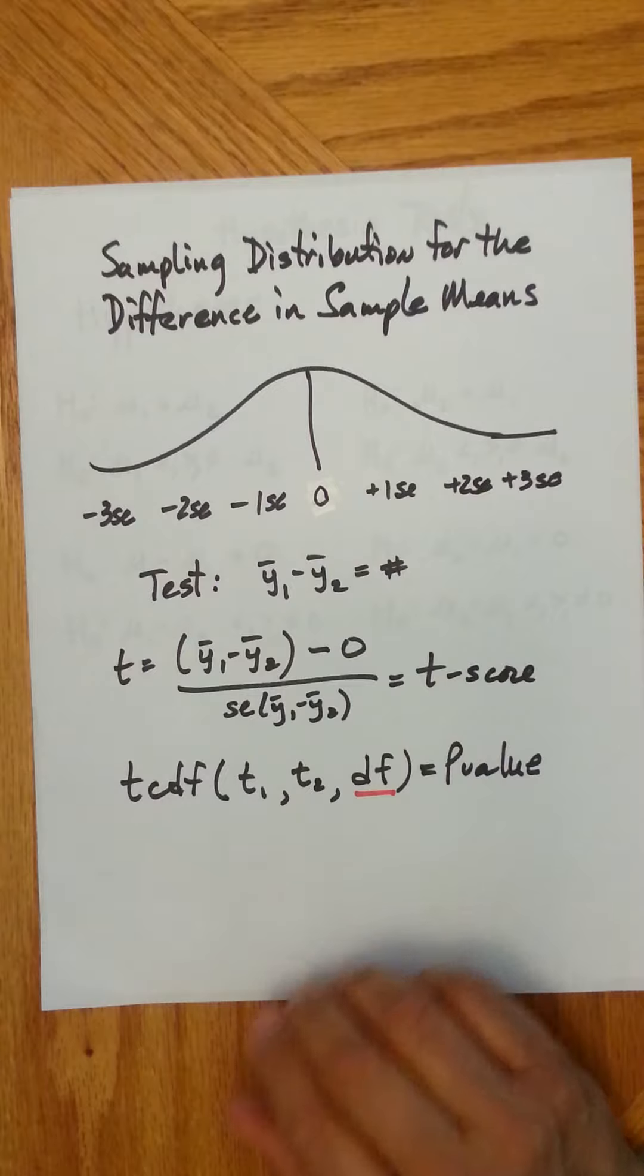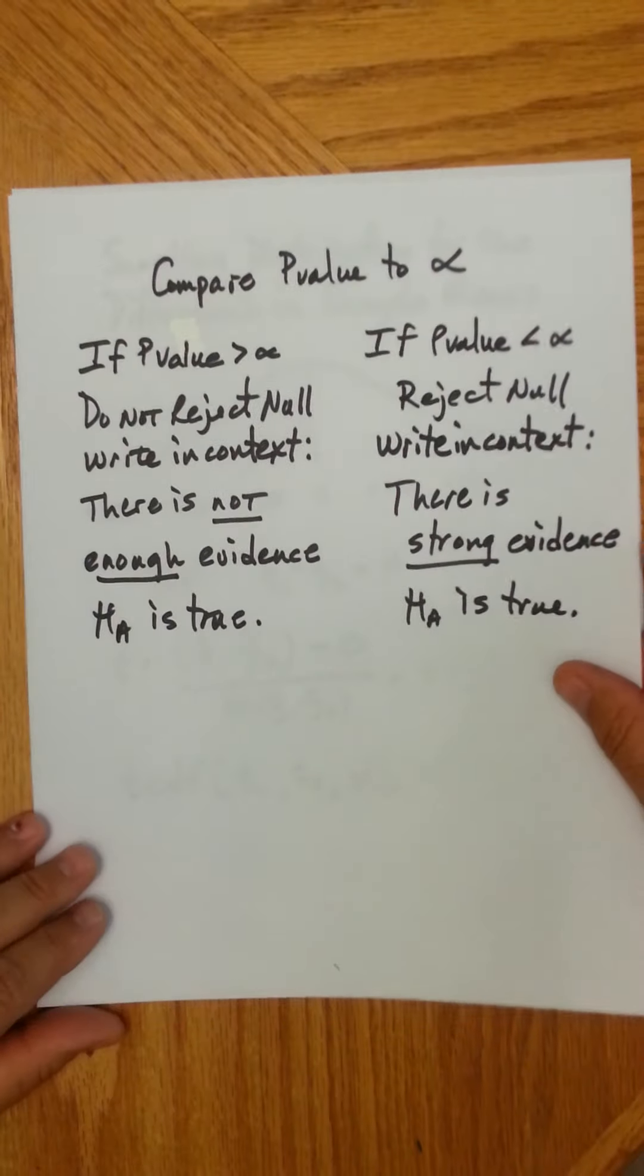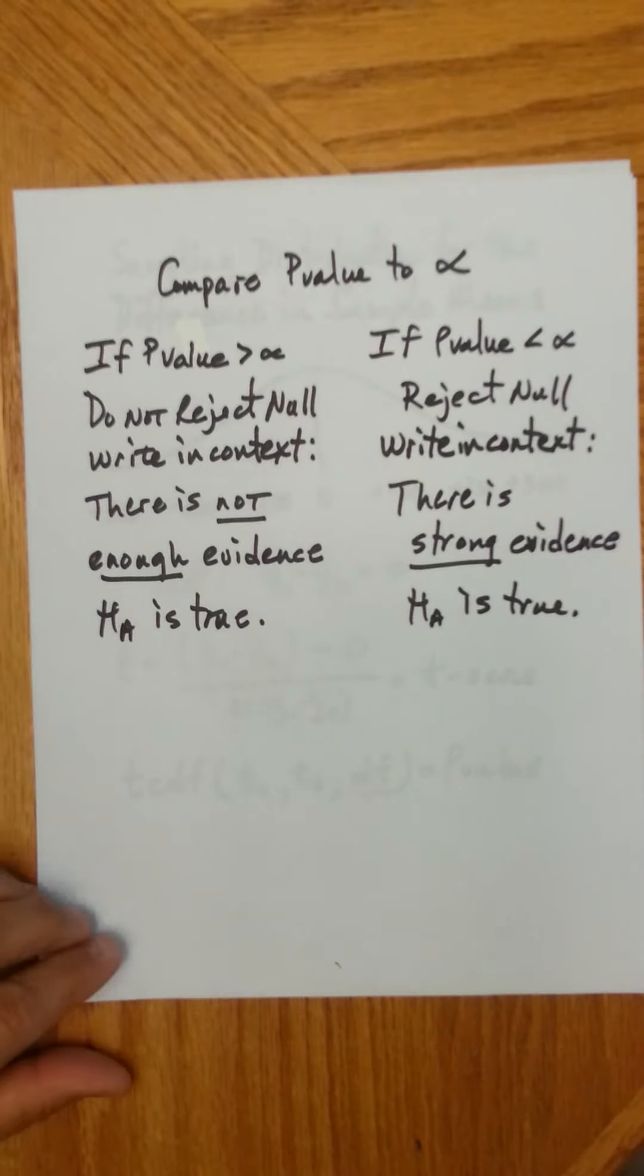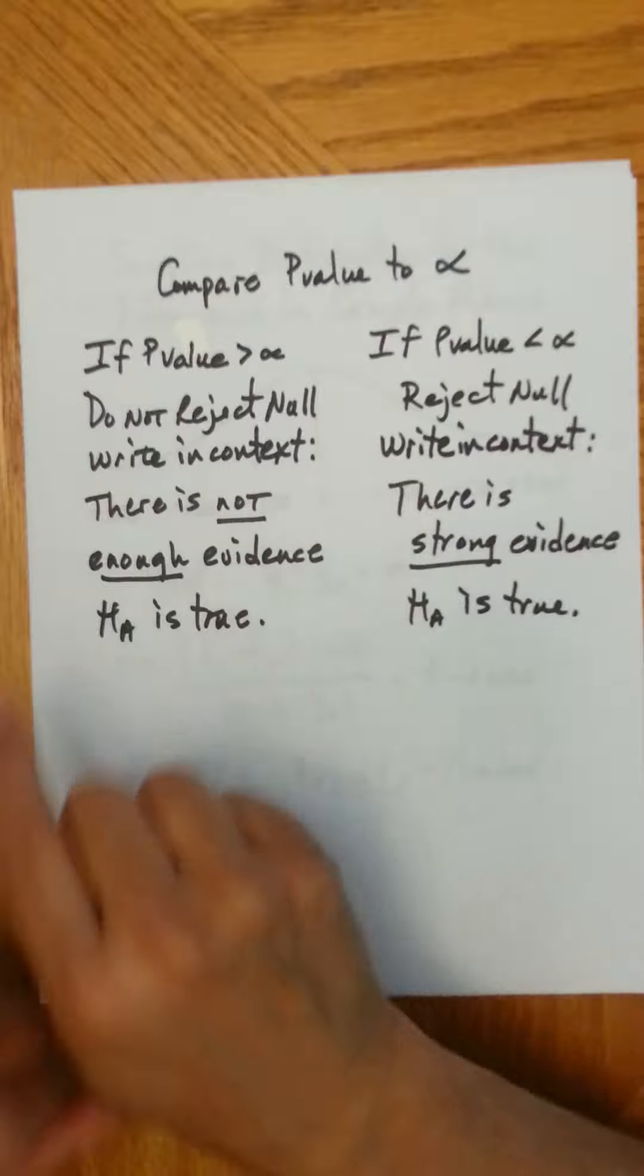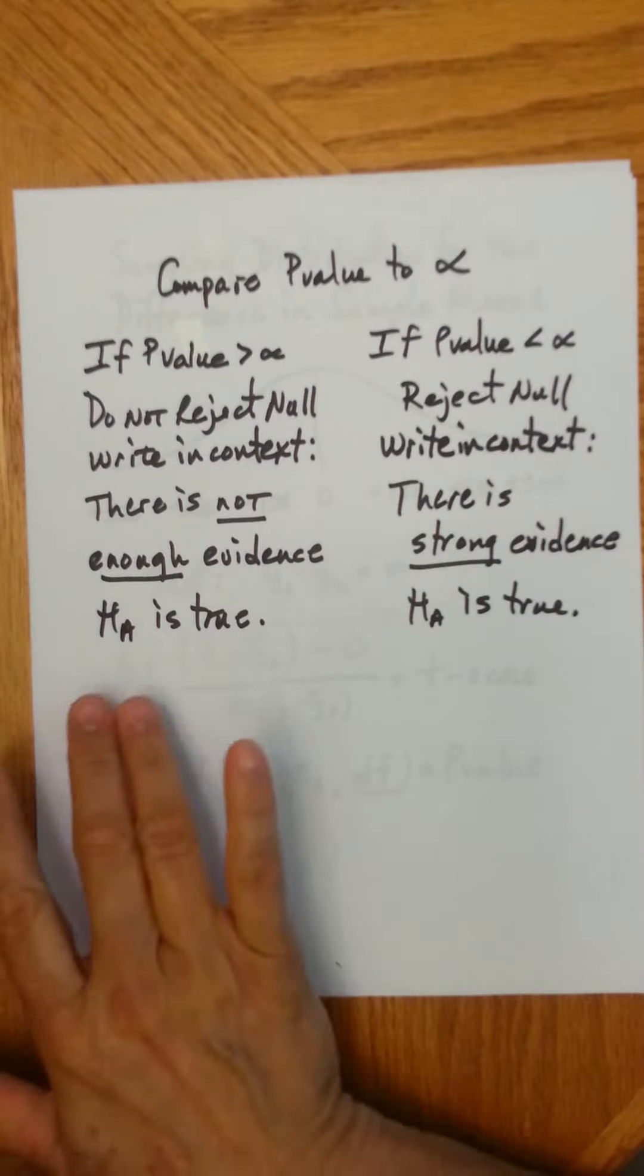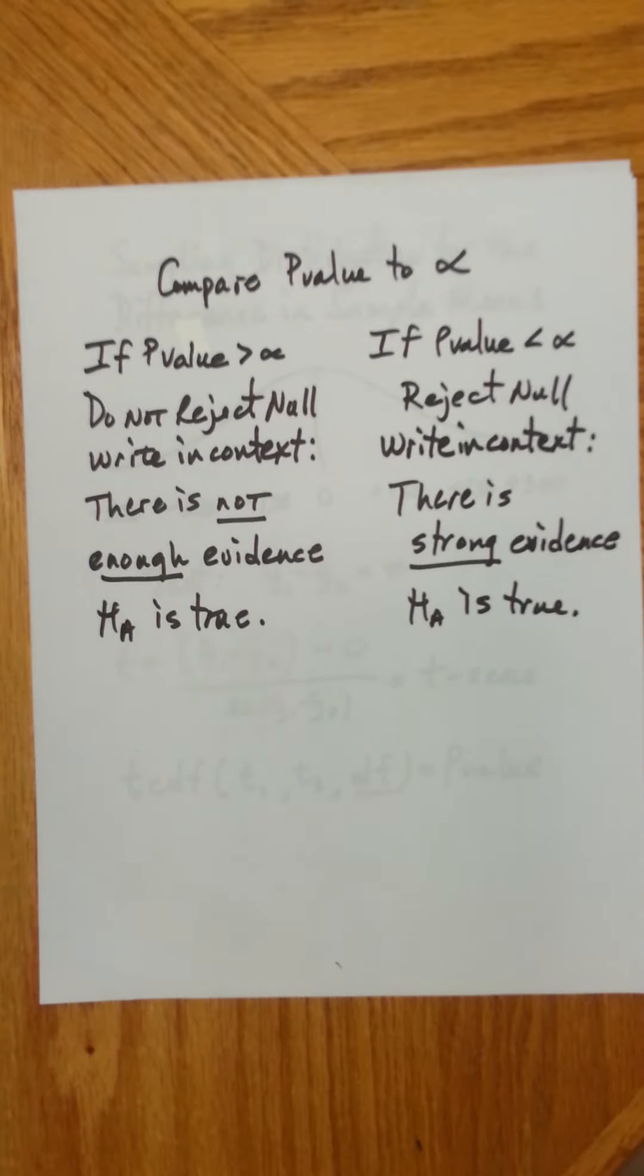Once you have your p-value, you proceed with your conclusion, and you compare your p-value to the significance level. Use 5% if it's not given. If it's given, use whatever alpha they give you. If the p-value is greater than alpha, the probability of getting that sample difference that you saw is larger than the significance level. You do not reject the null, and you write, in context, there's not enough evidence that the alternative is true. When I mean in context, you're obviously going to have to include the trait, what is it that you're measuring. You have to use the word average, because it's a numerical trait, and you should include your populations.